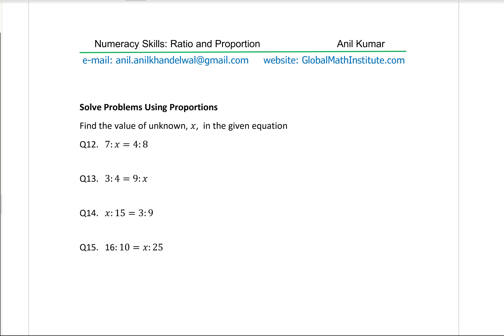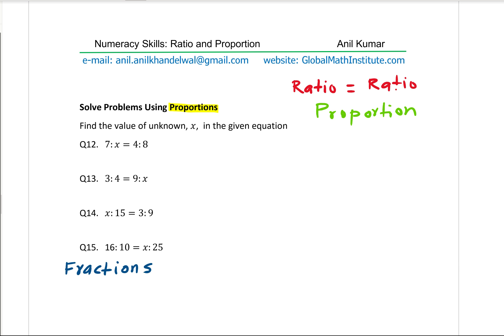Now we'll talk about solving equations involving proportions. A proportion is an equation with a ratio on each side: a/B equals C/D. To solve proportion equations, the two steps are: first, write the ratios as fractions, and second, apply cross multiplication.